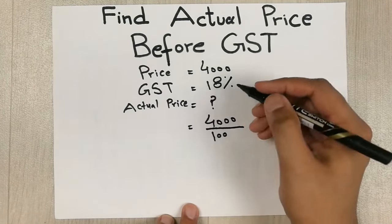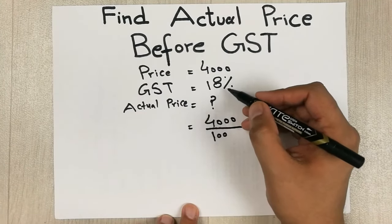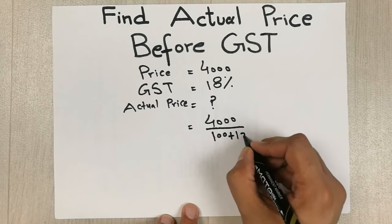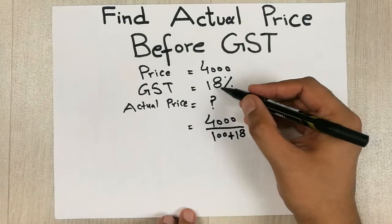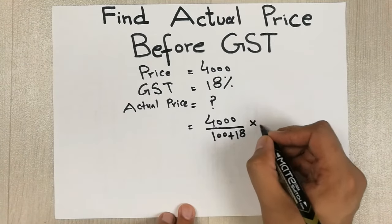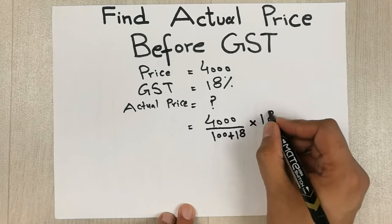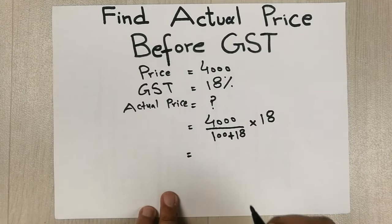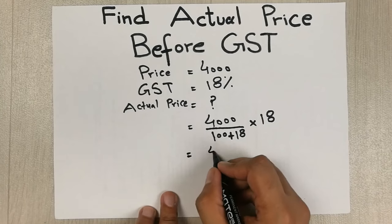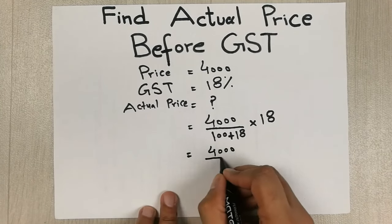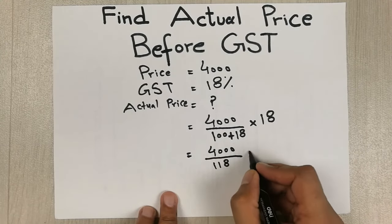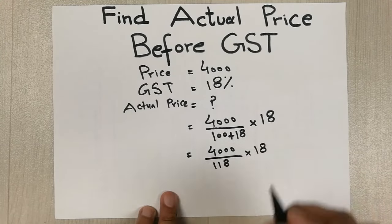Because the GST is in percentage form, we write 100, then we add 18 because GST is 18 percent, and then we multiply it by 18. So we write it like this: 4000 divided by (100 plus 18), which equals 118, and then we multiply it by 18.